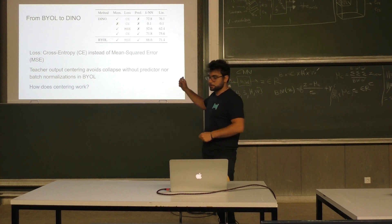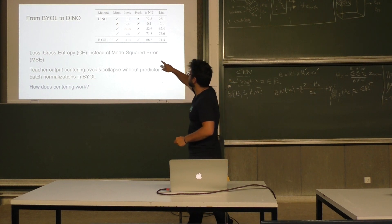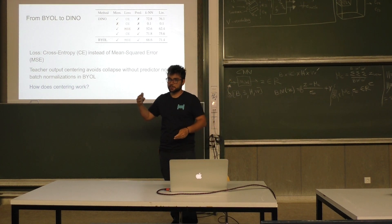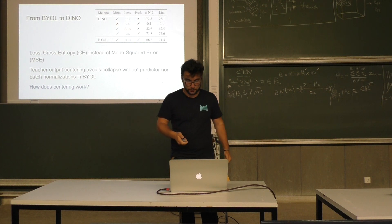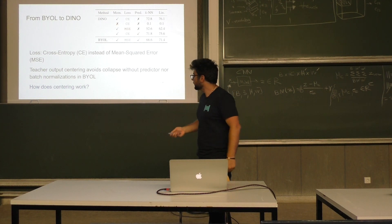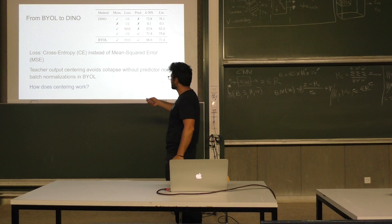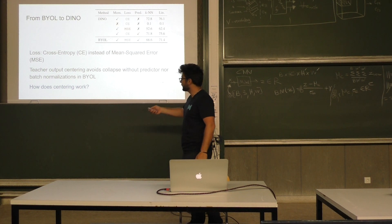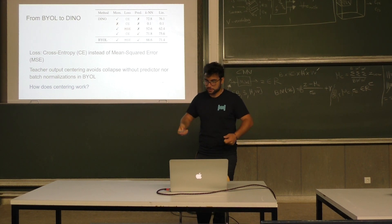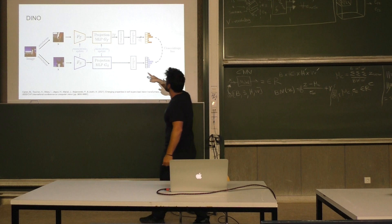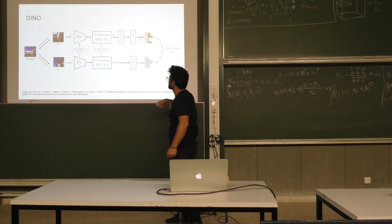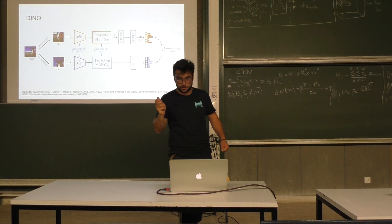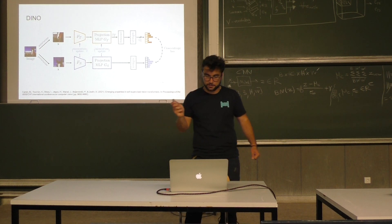And we still keep the momentum. Momentum is again the exponential moving average over the parameters. So now we will see how we avoid collapse, which is these boxes of centering and sharpening. In this image they don't show sharpening — I will explain what they mean with centering and sharpening.